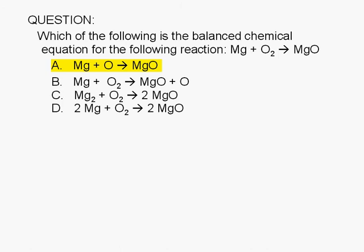A, Mg plus O yields MgO. B, Mg plus O2 yields MgO plus O. C, Mg2 plus O2 yields 2 MgO. Or D, 2 Mg plus O2 yields 2 MgO.